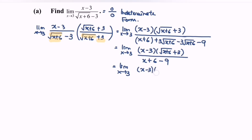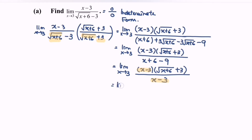And we will have the limit with (square root of x plus 6, plus 3) over (x minus 3). We notice that we have a common term which is (x minus 3), so finally we will have the limit as x approaches 3, and the function would be (square root of x plus 6, plus 3) over 1 — that is, just (square root of x plus 6, plus 3).